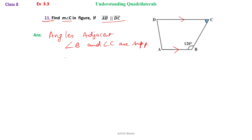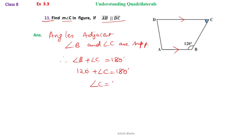Therefore, angle B plus angle C equals 180 degrees. Since angle B is 120 degrees, we have 120 plus angle C equals 180 degrees. So angle C equals 180 minus 120, which gives angle C equals 60 degrees.